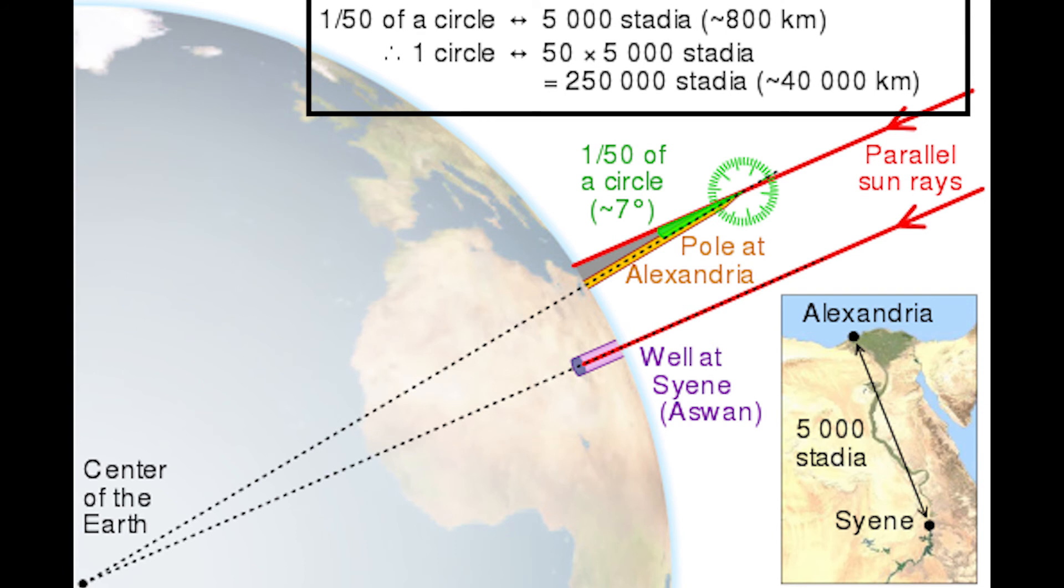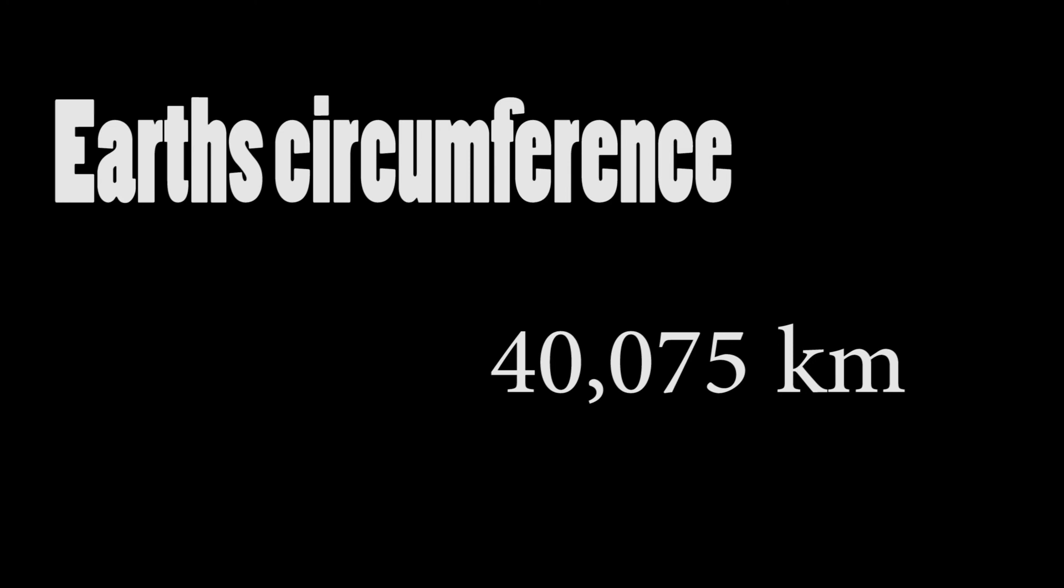We actually don't know the correct conversion rate of stadia to kilometers because there is no written record of this conversion. But now we know that earth circumference is around 40,000 kilometers. So he was the first man to try to find out the circumference of the earth. As we know the value of circumference of earth now, we can just put in the values and get the radius of earth from it.